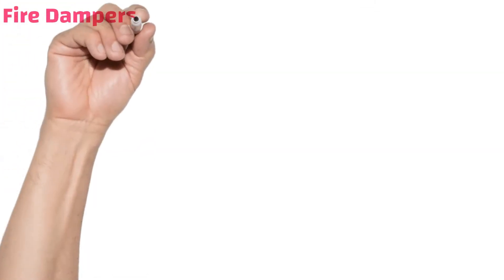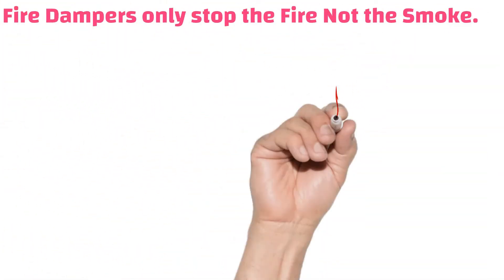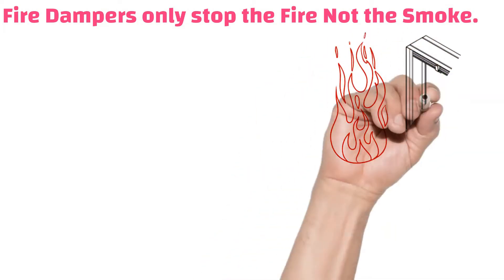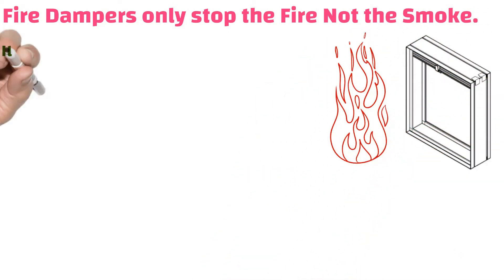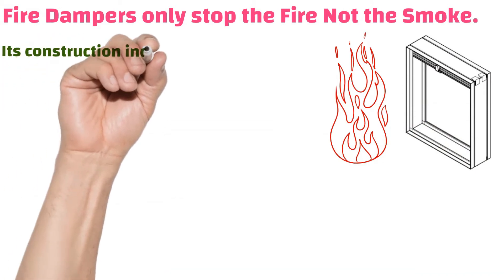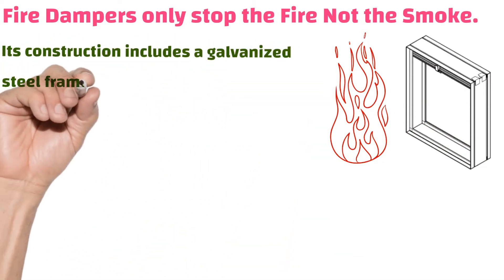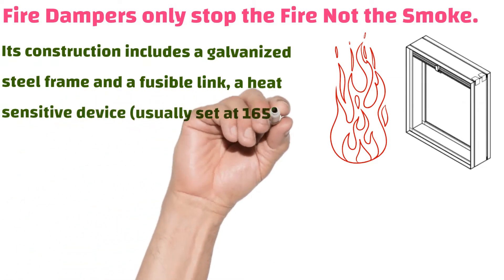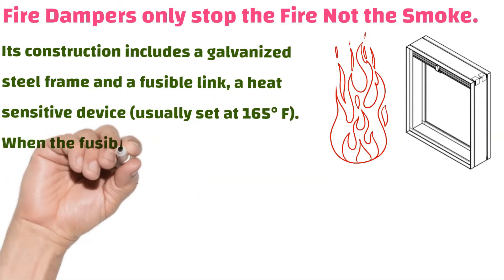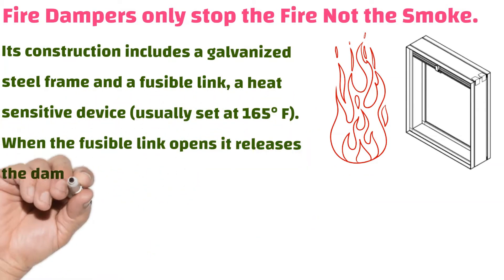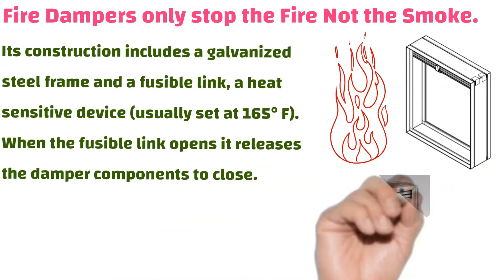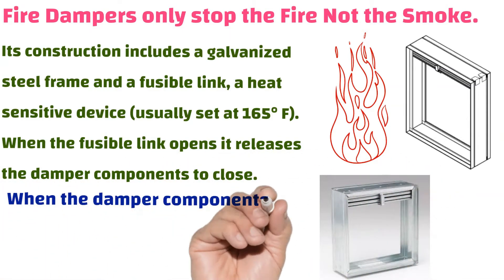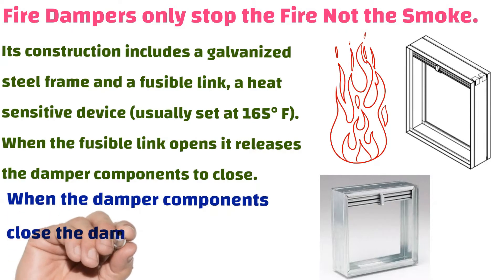Remember, fire dampers only stop the fire, not the smoke. Its construction includes a galvanized steel frame and a fusible link — a heat-sensitive device usually set at 165 degrees Fahrenheit. When the fusible link opens, it releases the damper components to close, restricting the migration of fire.